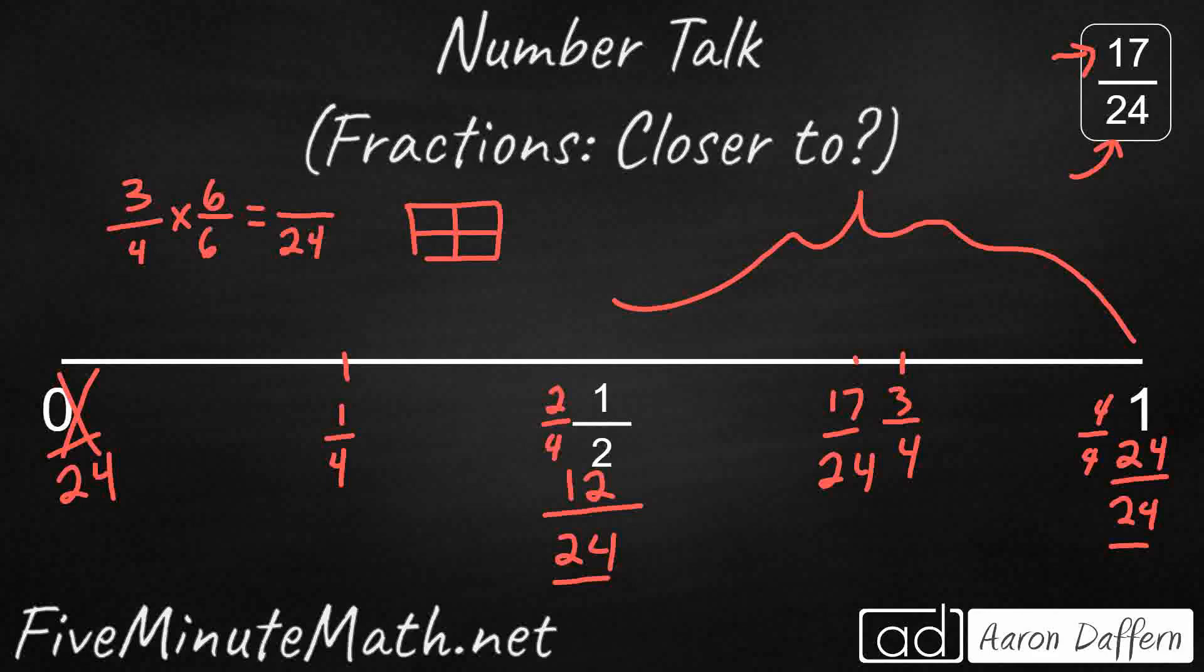Because remember, 6/6 is equal to 1. So you're just multiplying 3/4 by 1, which means you're multiplying it by nothing. And it's going to end up staying the same. Anything times 1 is itself. You're just making it look different. That's all an equivalent fraction is. You're just making it look different because you're changing the number of pieces it's cut into.